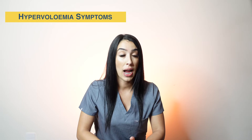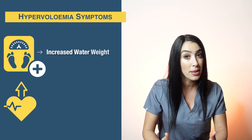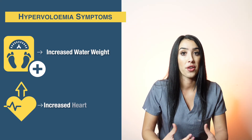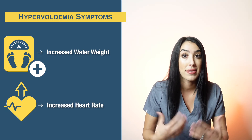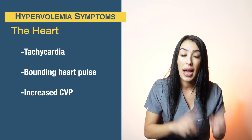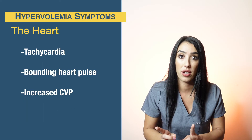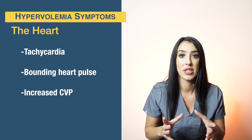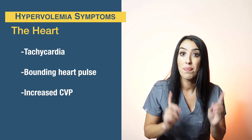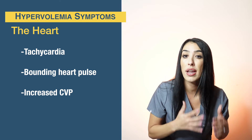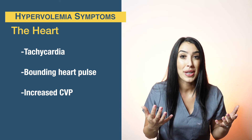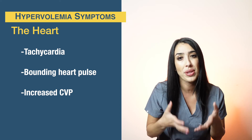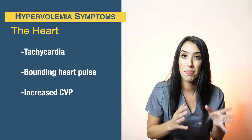Signs and symptoms of hypervolemia include increased weight — specifically a lot of water weight. Cardiovascularly, patients will have increased heart rate, tachycardia, but the difference from hypovolemia is that hypervolemic patients have a bounding pulse, whereas hypovolemic patients have a weak, thready pulse. Central venous pressures are increased in hypervolemic patients because there is more fluid backed up into the heart and body.